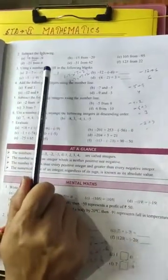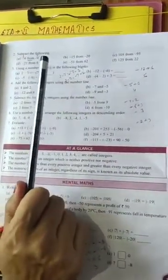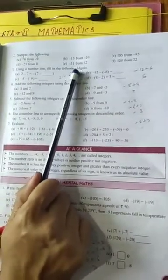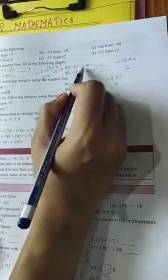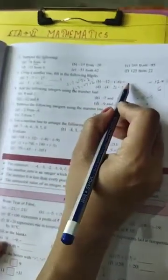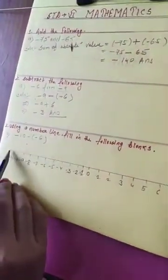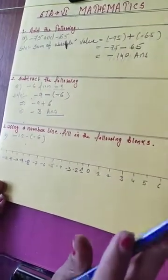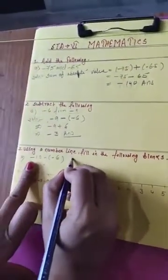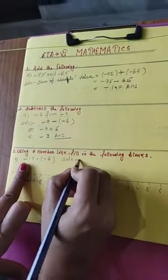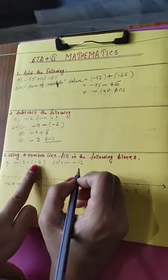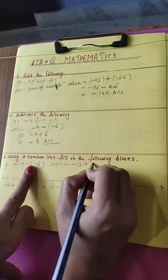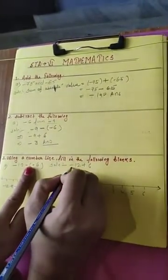Question number 3: using a number line, you have to draw a number line and fill in the following blanks. Question number 2 part a: minus 12 minus, and in the bracket minus 6. You have to find out your answer. Write the solution: minus 12 minus, and in the bracket minus, so minus minus becomes plus 6.